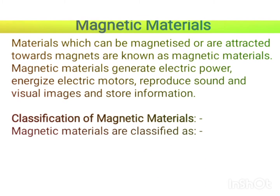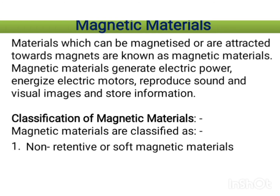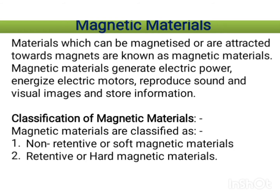Magnetic materials are classified as: first, non-retentive or soft magnetic materials; second, retentive or hard magnetic materials; and third, special alloy materials. We will understand them one by one.